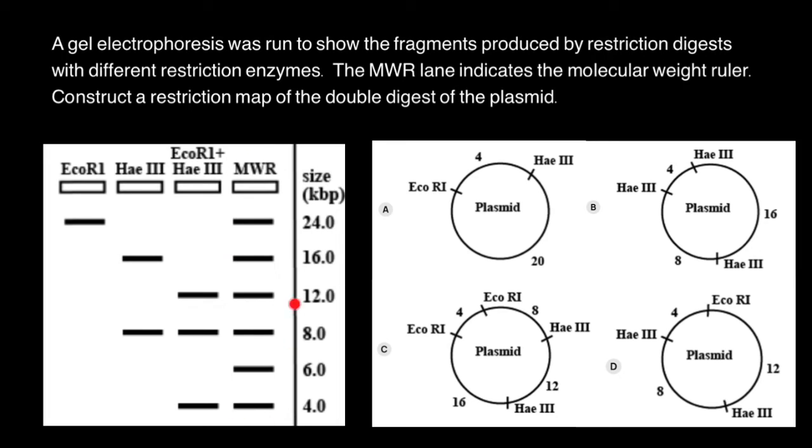And as you see, the last lane here represents the molecular weight ruler, which we are using in order to determine the molecular weight of other bands on this gel. Now, let's analyze a restriction map of the double digest of this plasmid.